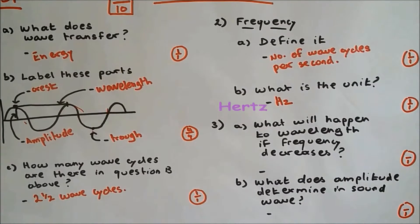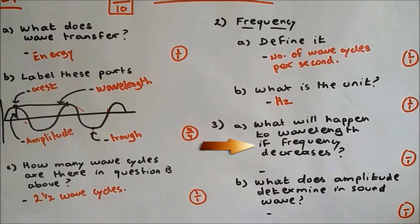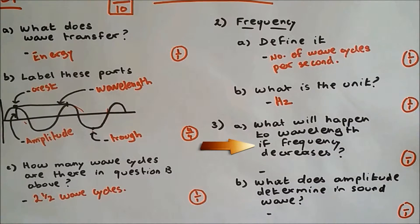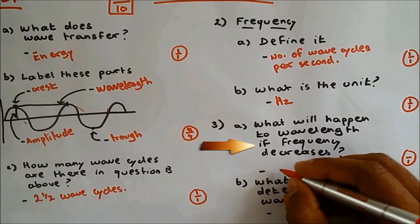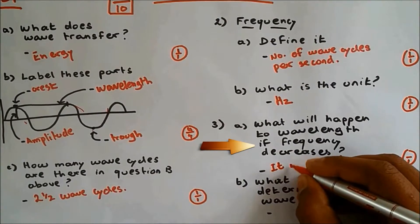Question 3a. What will happen to wavelength if frequency decreases? Now, if frequency decreases, wavelength increases. I have explained this in more details in my teaching video. If you want, you could go and watch it. So wavelength increases.